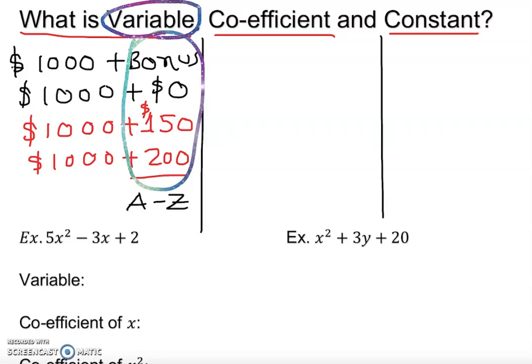Now coefficient. So let's say I have an expression here, negative 4x square. So basically, negative 4 will become my coefficient on the left side of the variable. Or it can be a little bit different, negative 4xy. Still, my coefficient is going to be negative 4, or some other number.